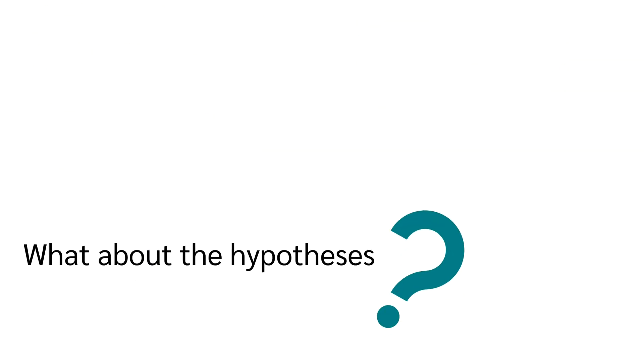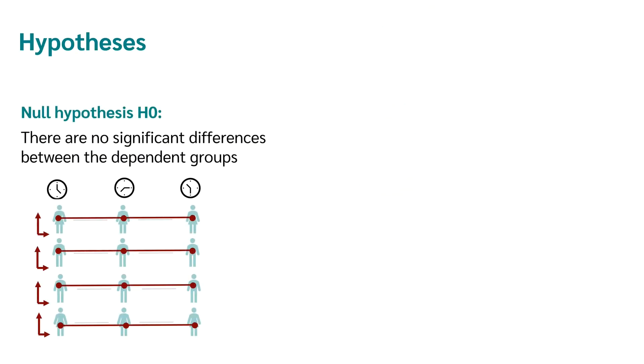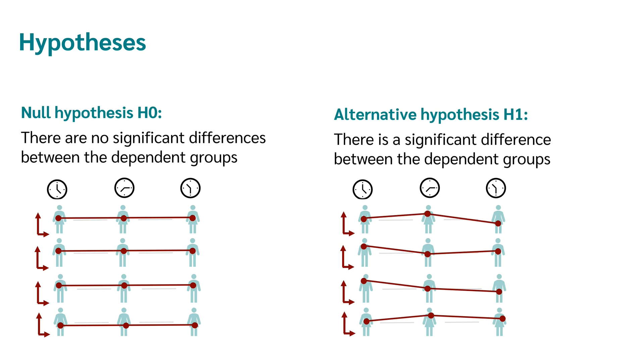Now we have a good transition to the hypotheses. In the analysis of variance with repeated measures, the null hypothesis is: there are no significant differences between the dependent groups. And the alternative hypothesis is: there is a significant difference between the dependent groups.